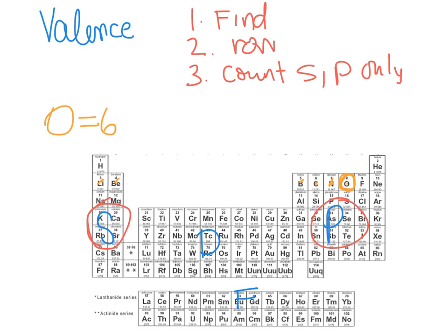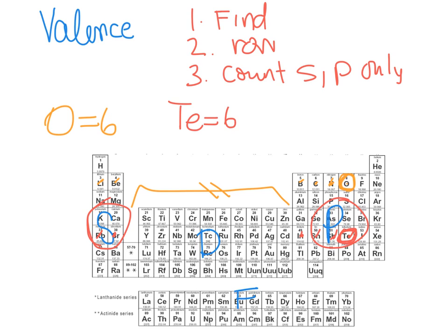If we were to look at tellurium, we would start at its row and count: one, two, three, four, five, six. So tellurium also has six valence electrons. Recall, we do not count any in the D section — those are on one of the inner energy levels.